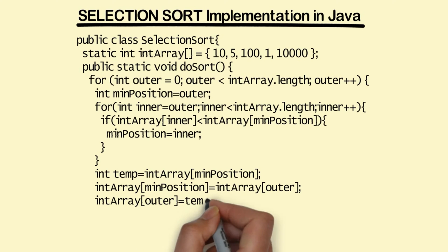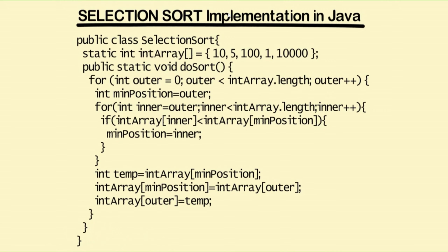Next we need to swap the minimum number in the unsorted list with the number at the head of the unsorted list. We swap the minimum number of the unsorted list with the element at the index position equal to the outer loop counter — which is the iteration number. The loop counters start from 0, so the fourth iteration has outer equal to 3, corresponding to index 3. So the number at the head of the unsorted list has an index equal to the outer loop counter's value.